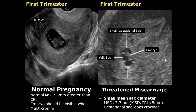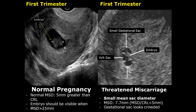The next feature is related to the size of the gestational sac — a small mean sac diameter. In normal cases, the mean sac diameter must be at least 5 millimeters greater than the crown rump length (CRL). The embryo must be visible when the MSD crosses 25 millimeters. Here you can see the embryo as well as the yolk sac, but the gestational sac is very small — the MSD is only 7.7 millimeters — and the gestational sac looks crowded.